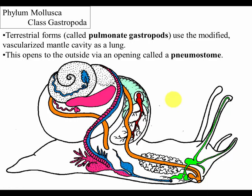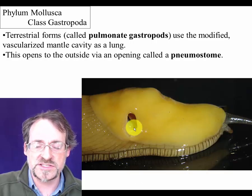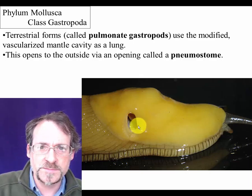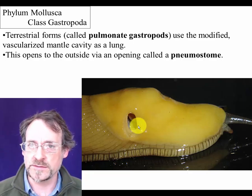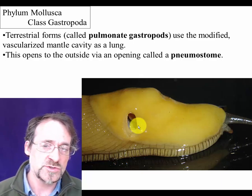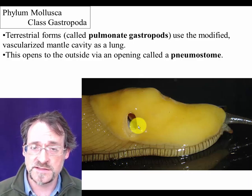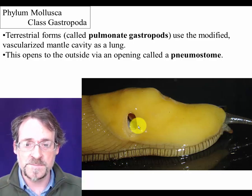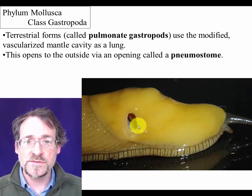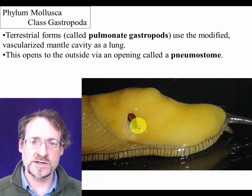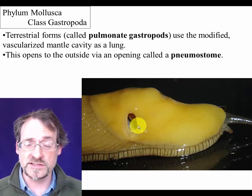There's a small opening from the inside of the mantle cavity to the outside called a pneumostome. You can see it here on the side of this giant banana slug, one of the only gastropods big enough to easily see this structure. This structure — a large internal surface area for gas exchange with a very small opening to the outside — appears over and over in all kinds of organisms including plants. Like the stomata in plants, it allows the organism to expose lots of surface area to the air without losing lots of water.